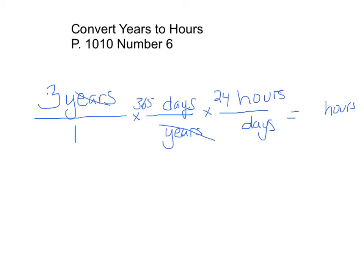And then to make these fractions, I can go ahead and put the ones here. So to change years into hours, all I have to do is multiply 3 times 365 times 24, and that will give me my answer.